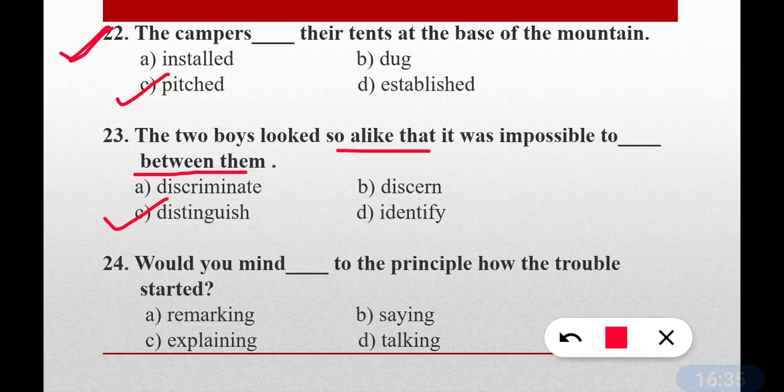Question number twenty-four: Would you mind dash to the principal how the trouble started? The correct answer is option C — explaining. Would you mind explaining to the principal how the trouble started? 'Explaining' means to describe or narrate how the trouble began.